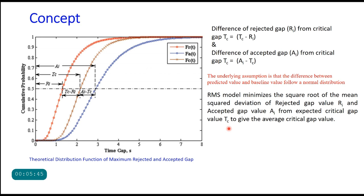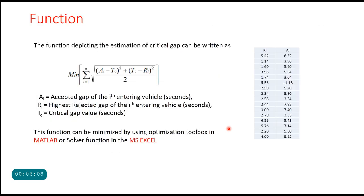One, it does not make prior assumption of consistent drivers, which is always untrue for real-world situations. Two, it does not fail even if there is no rejection of gaps, which is very common in mixed traffic conditions, because in that case you can always put value of Ri as zero.